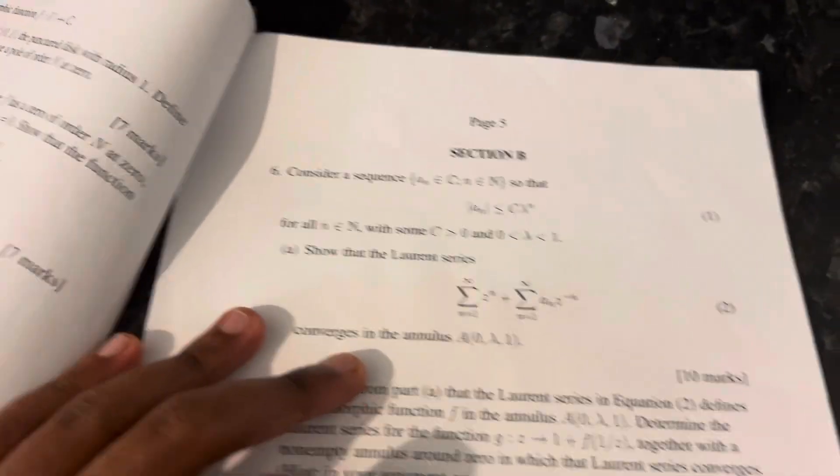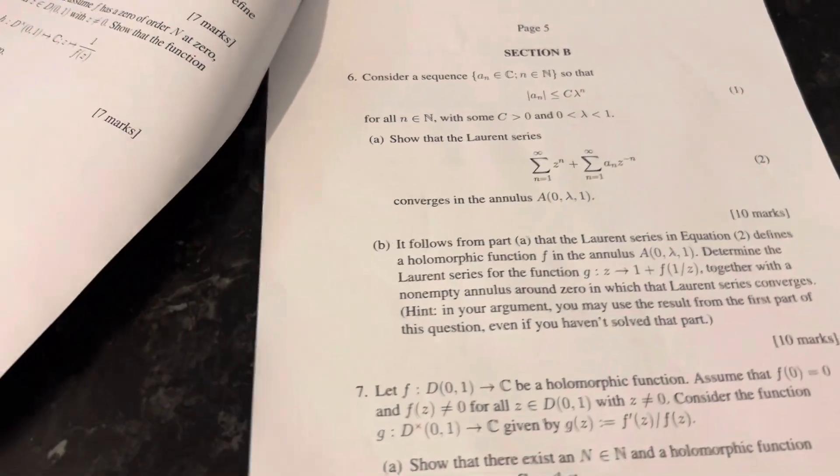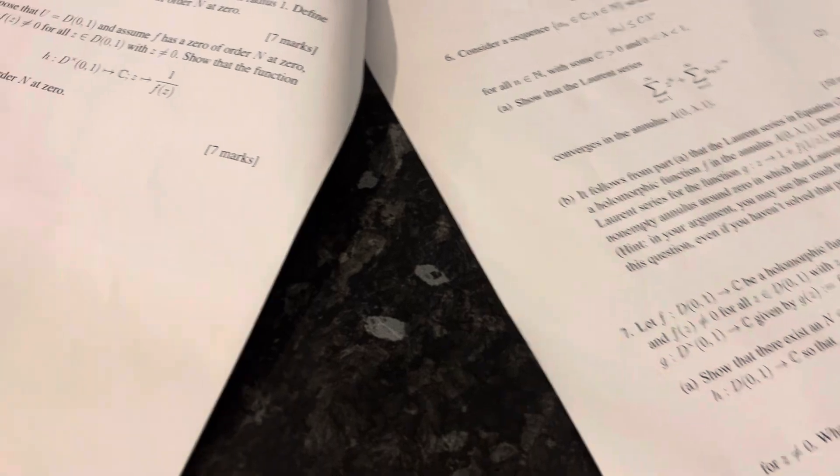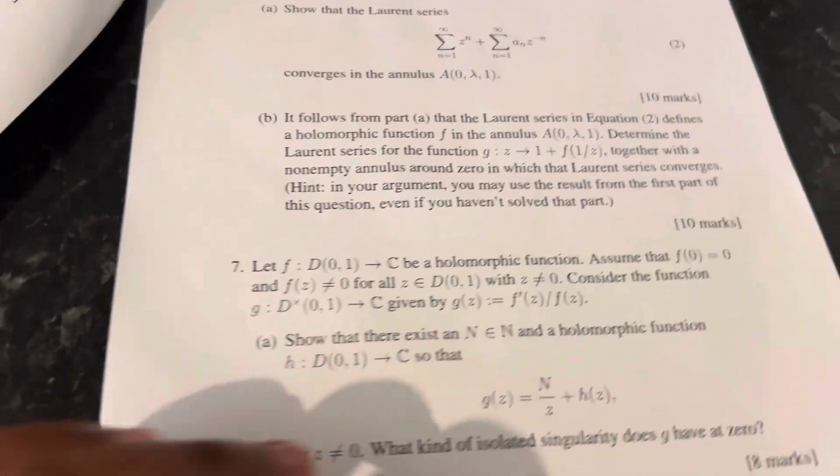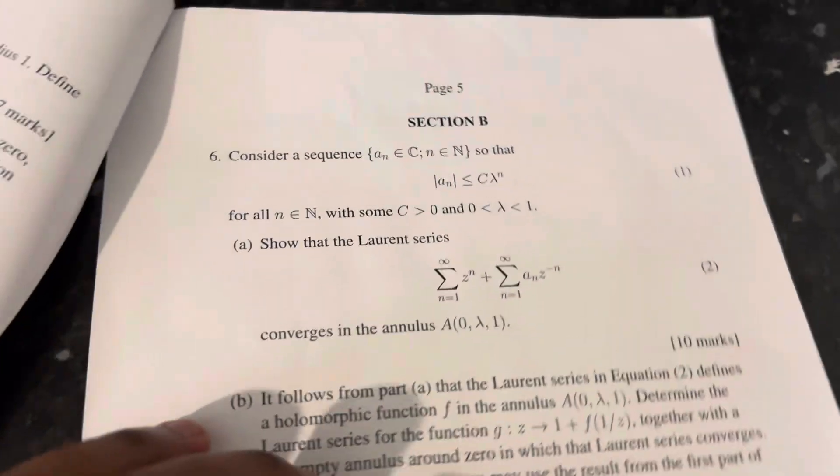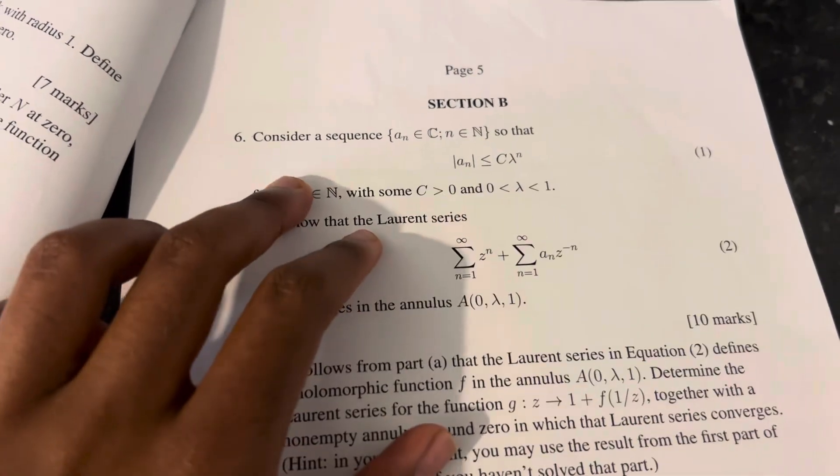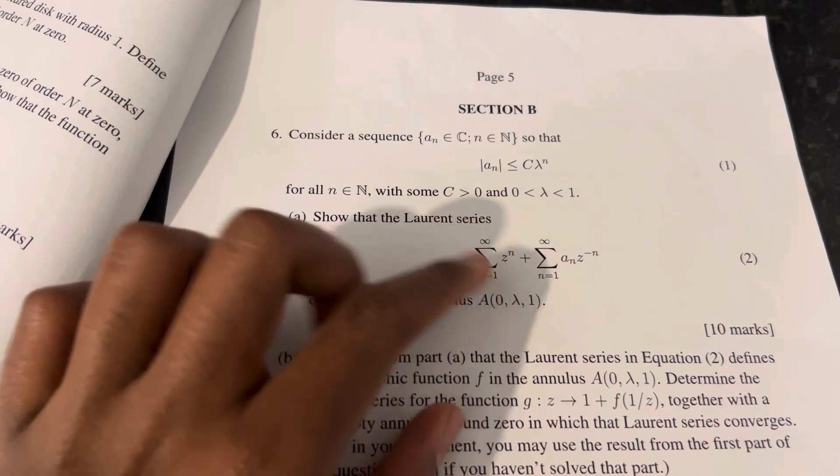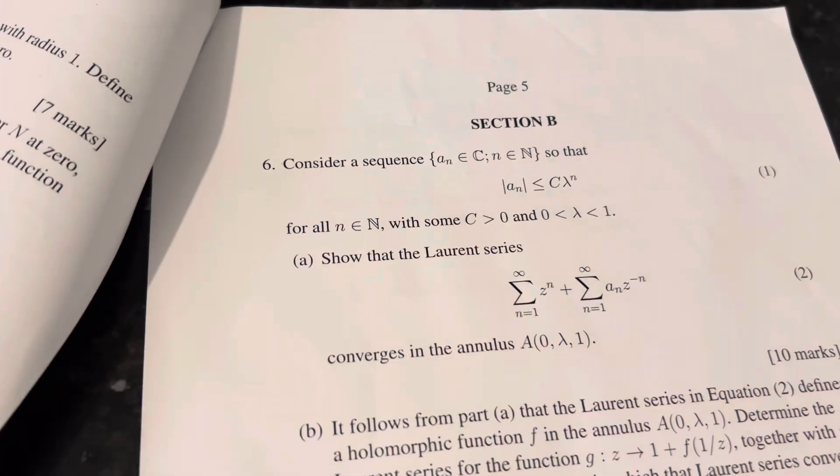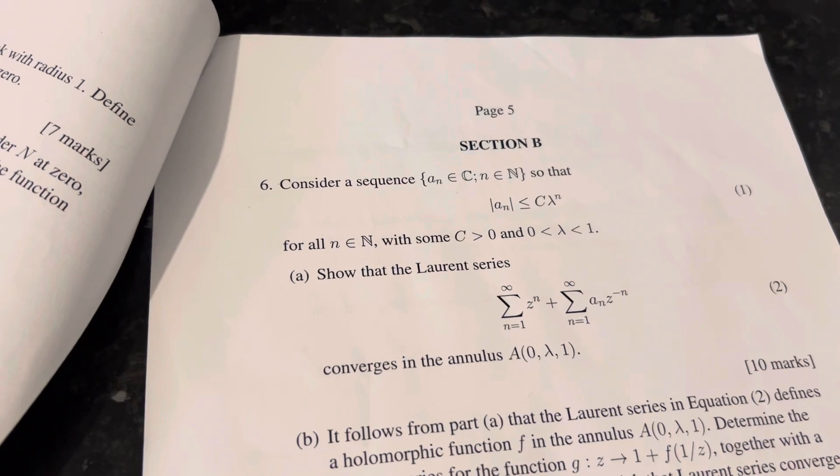Section B. The way these exams are set up is you had to do all of the questions in section A, so questions one to five in this paper, and then two from section B. You can attempt as many as you'd like, and your best two questions is what would go to your grade.